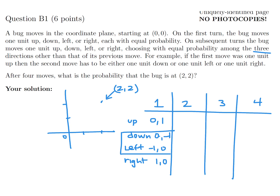If you went down to (0,-1), it's impossible to get to (2,2) with three remaining moves. Same with going left to (-1,0) — with three moves you can't get there either. So those two starting directions are eliminated.